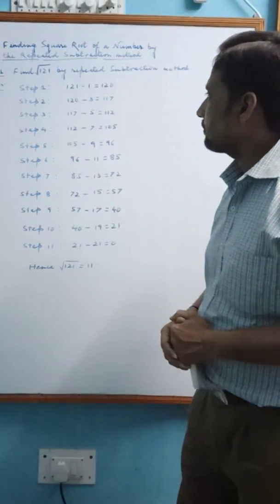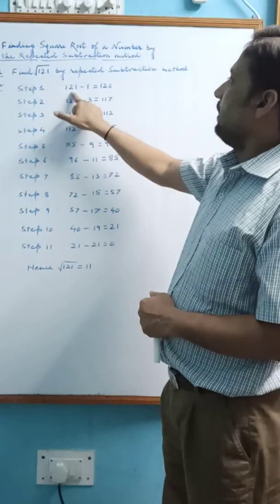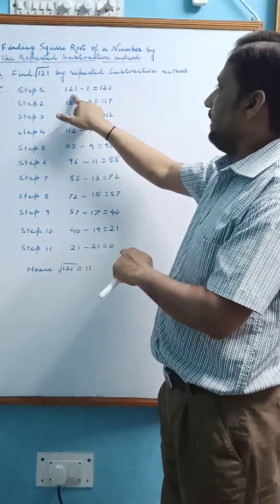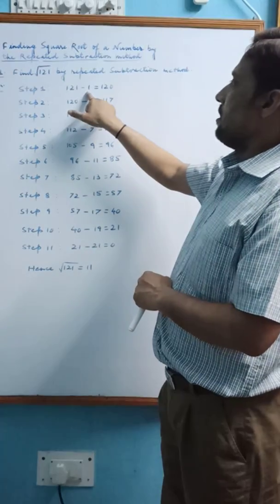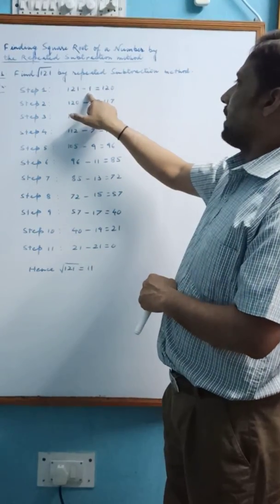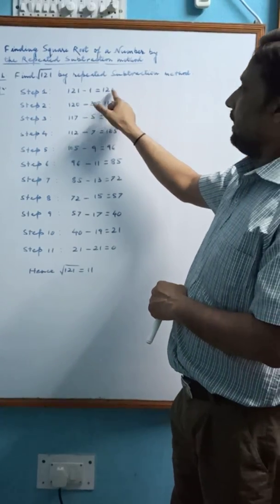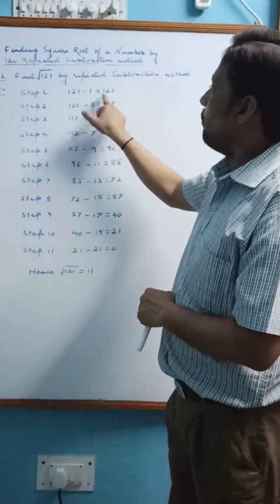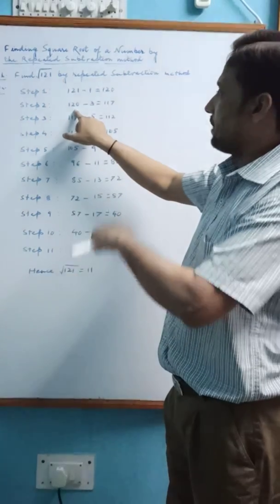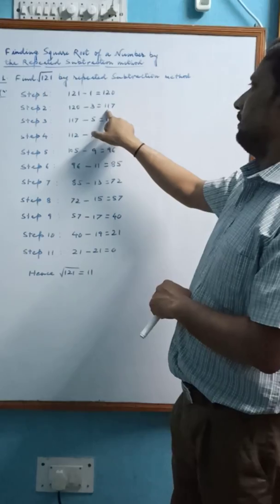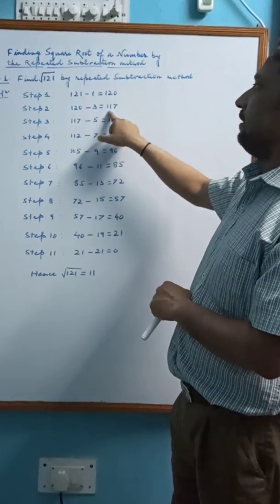In step 1, 121 is subtracted by the first odd number 1 and we find 120. In next step 2, 120 is subtracted by the next odd number 3 and we find 117.